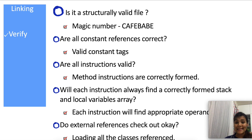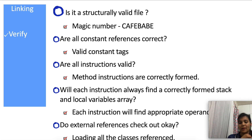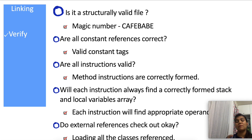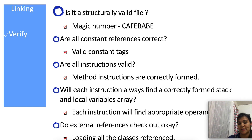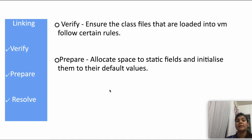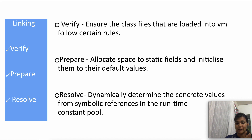Preparation, as mentioned earlier, is when you load the static variables of the class — not the instance variables, just variables with the static keyword. So if you have a class with 'static int count = 2', that variable gets memory in the runtime area and then gets a default value — not its actual value. The default value for an int type variable is zero, so the static variable is assigned zero at the preparation phase.